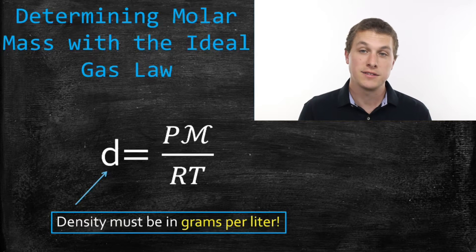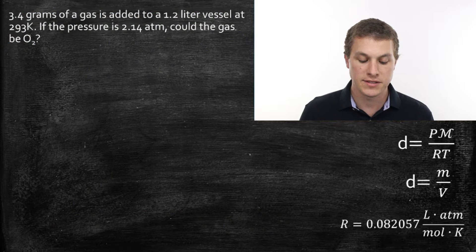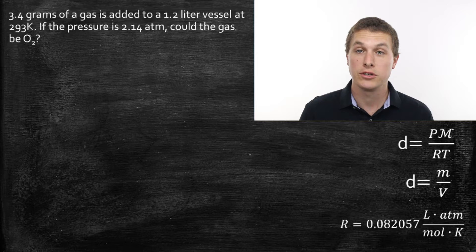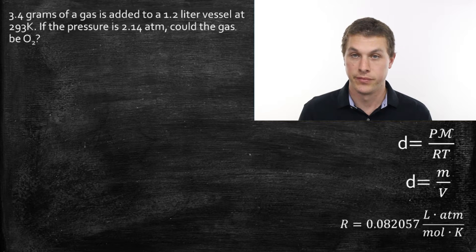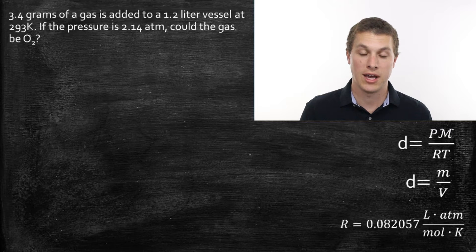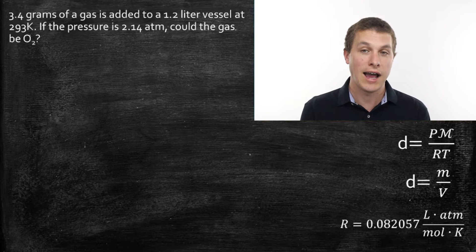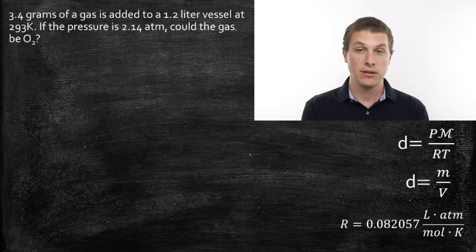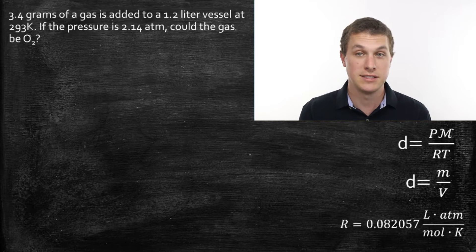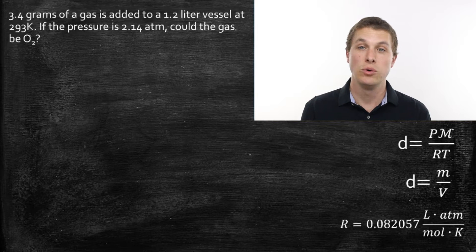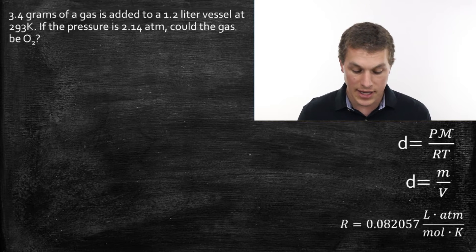One of the most common problem types asks you to identify a gas based on its density, pressure, and temperature. For example: if you have 3.4 grams of gas in a 1.2-liter vessel at 293 Kelvin and a pressure of 2.4 ATM, could the gas be oxygen? Because the new form of our ideal gas law lets us calculate molar mass, we can decide — if the molar mass matches O2 it could be O2, and if not, it couldn't be.